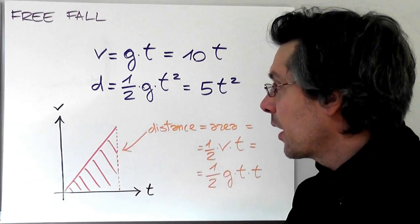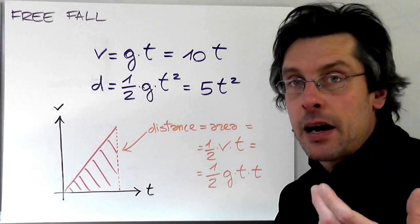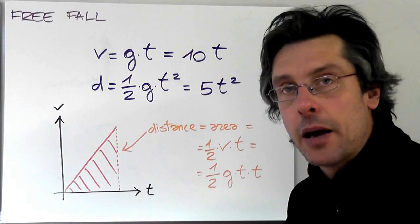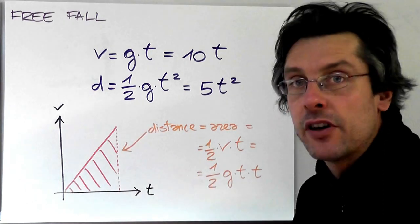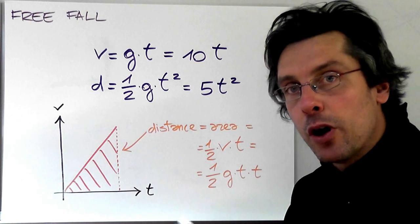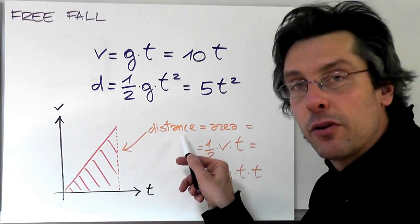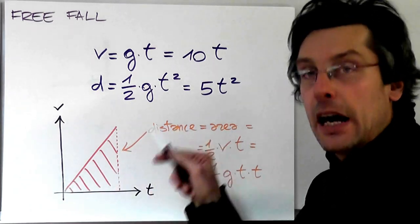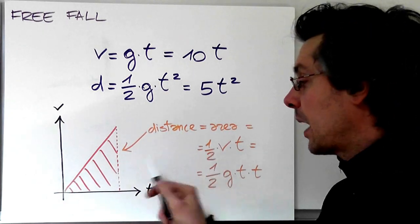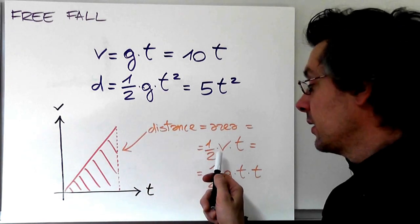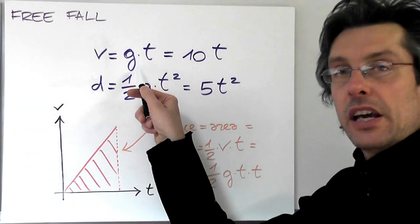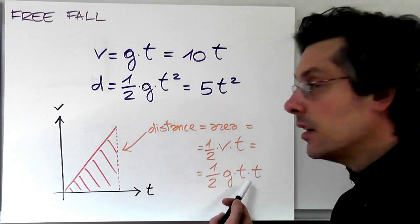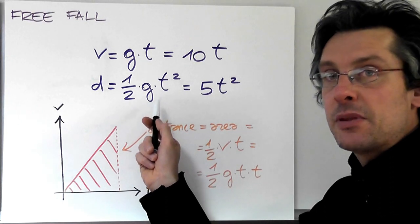And how did I come out of this equation? We have to go back to when we saw speed-time graphs. The speed-time graph for a falling object in free fall looks like this. Here we have the speed, here we have the time, and here we have a straight line. A straight line in a speed-time graph means a constant acceleration. But we also know that in a speed-time graph, the distance traveled is numerically equal to the area under the graph. And in this specific case, the graph is a triangle. And we know that the area of a triangle is one-half times base times height. So one-half times V times T. But V is g times T. So this is one-half times g times T again, which is exactly this: one-half g times T squared.